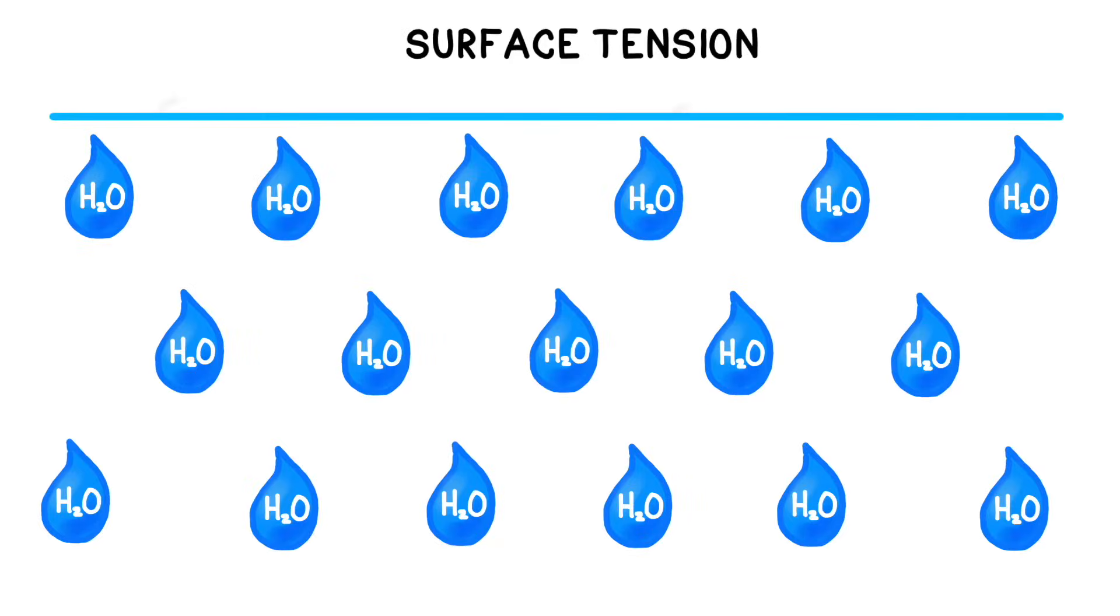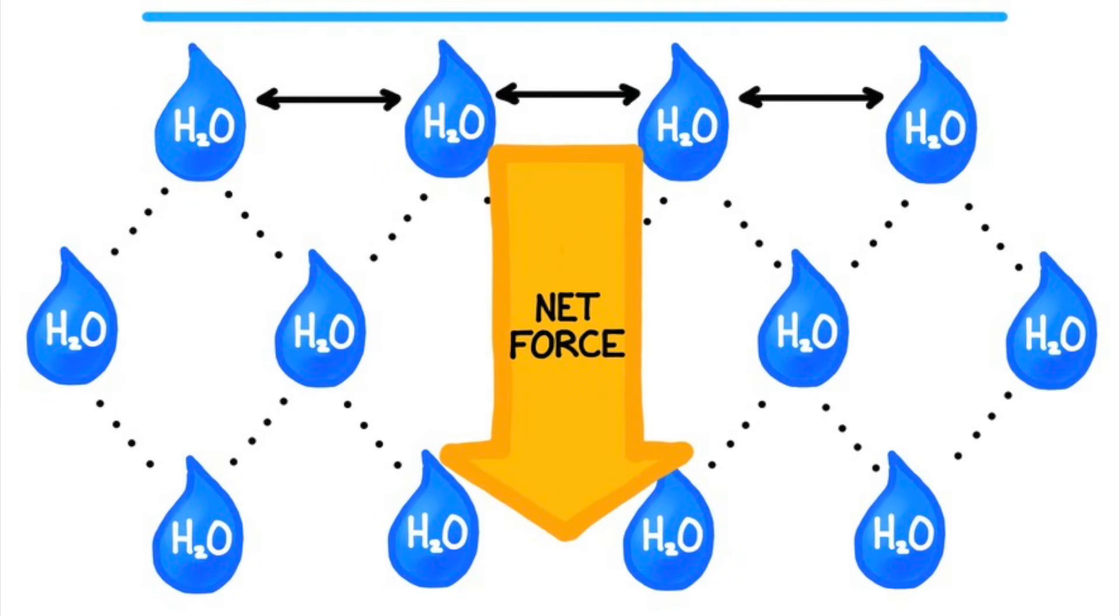At the surface of the water, however, the outer molecules have fewer adjacent water molecules to bond to. So instead, they reinforce the bonds with the molecules that are close to them. Because there are forces pulling the outermost molecules downwards and to the side, but not upwards, it creates a stronger layer on the surface and a net force that pulls the molecules inwards.